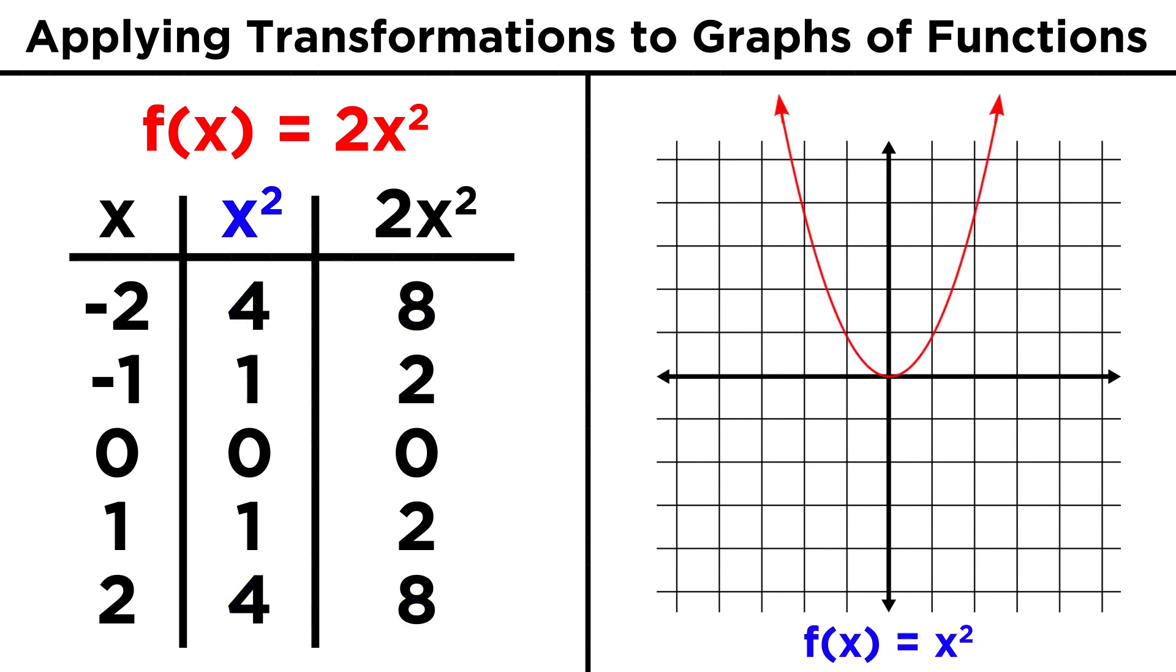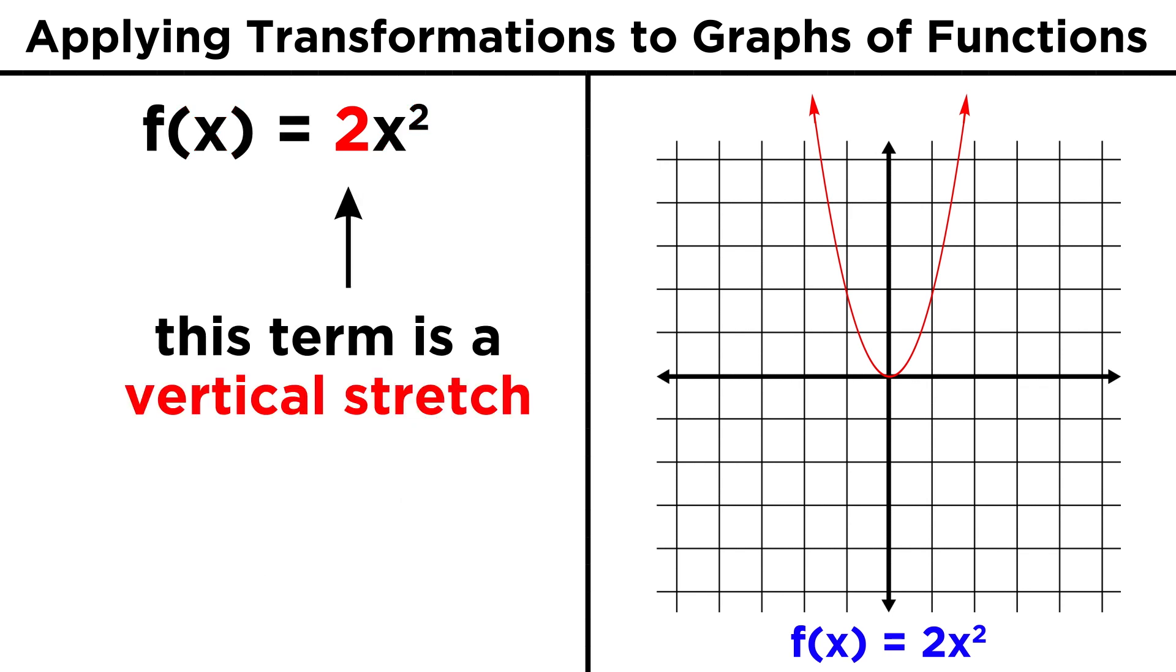Graphing these points, we see that it looks like x squared, but it has been stretched out, so that it is twice as narrow. This is called a vertical stretch.